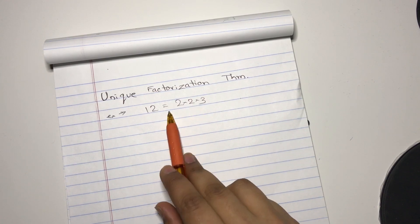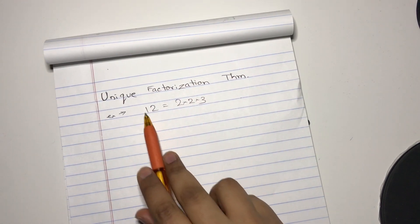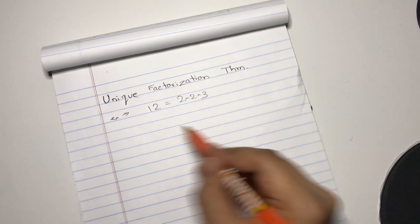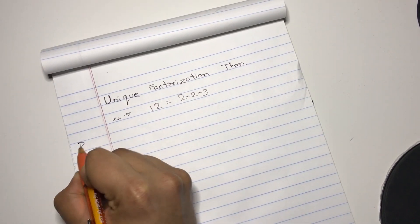The orientation of these numbers don't really matter. But yeah, we're going to prove that a number will have a unique factorization. Okay, let's start with the proof.